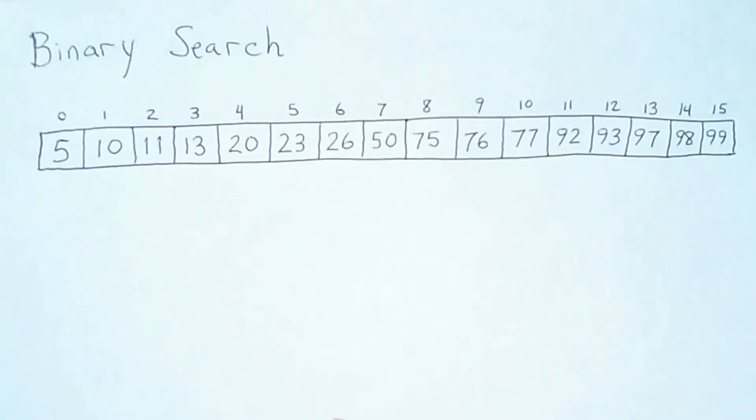The algorithm searches for a value by repeatedly comparing it to the middle value and then refocusing the search on one half of the array sub-range that was just being checked. This search can be easily represented recursively.